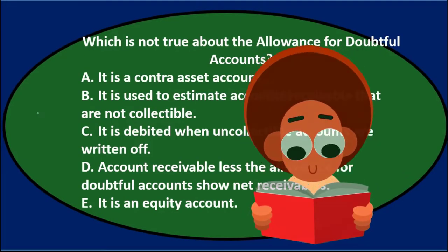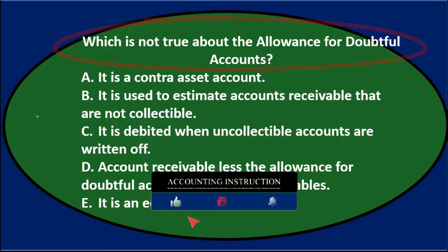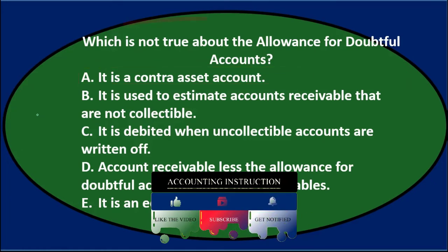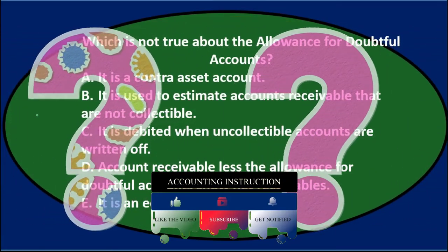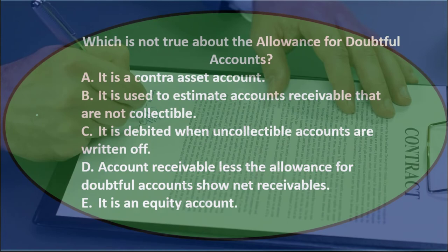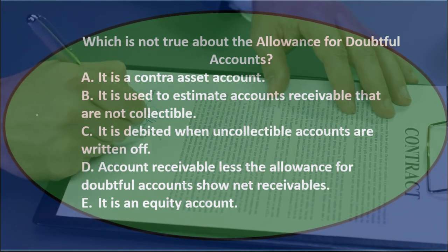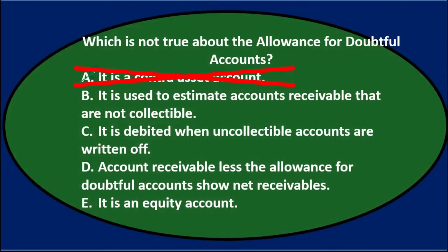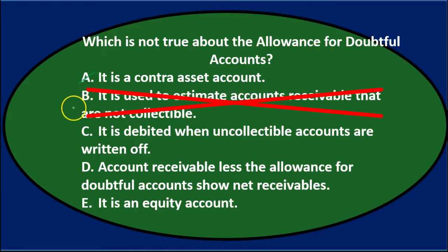Process of elimination — which is NOT true about the Allowance for Doubtful Accounts? A says it's a Contra Account. The Allowance Account is a Contra Account because we're trying to value the receivables, estimate what's uncollectible, and make a Contra Account that counteracts the receivable. So A is true — not the correct answer. B says it's used to estimate accounts receivable that are not collectible — that's what the Allowance for Doubtful Accounts is, so B is also true.